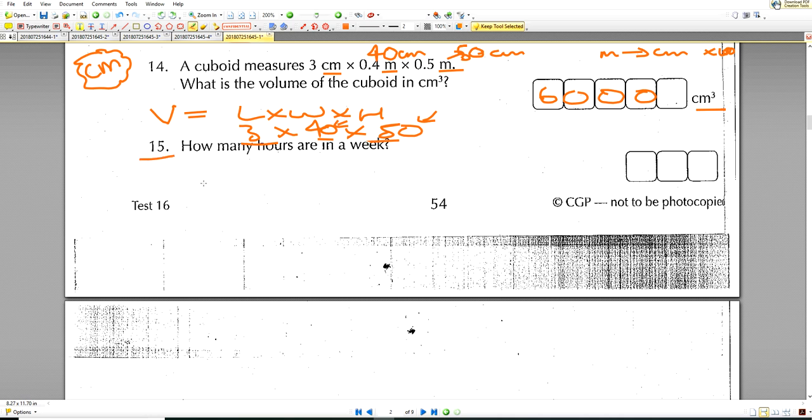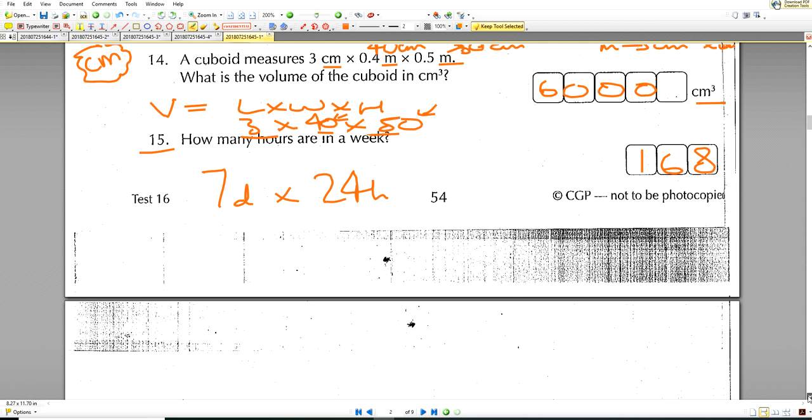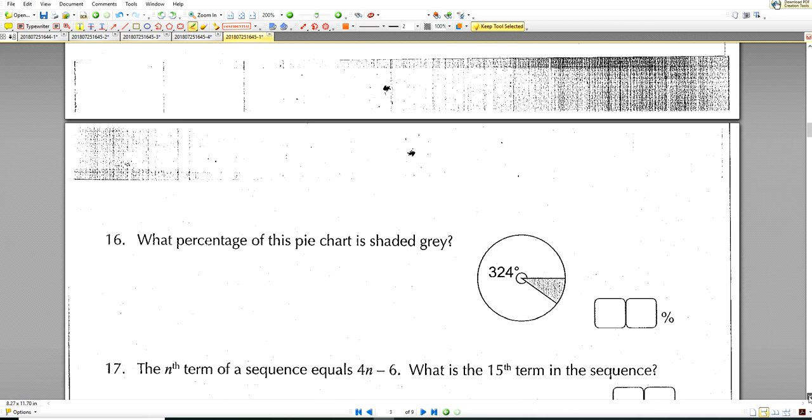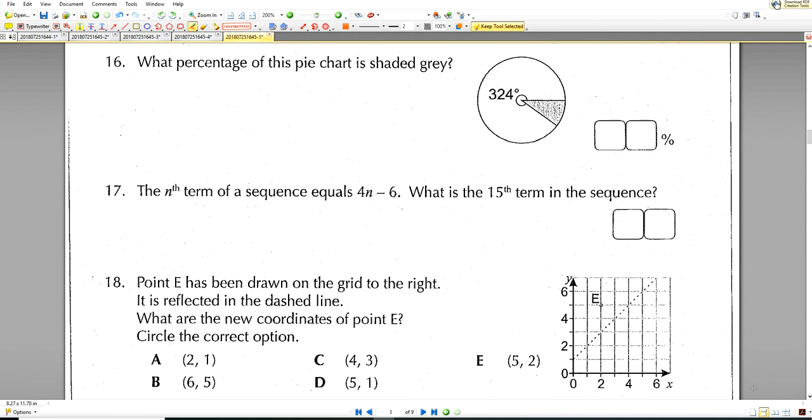Number 15, how many hours are there in a week? Well, we have 7 days in a week. And in each day, we have 24 hours. So we have to do 24 times by 7. And that will give us an answer of 168. Let's move on forward to question number 16.